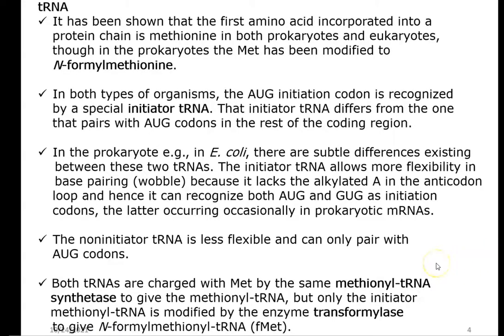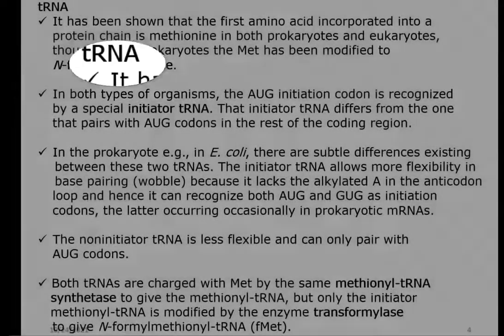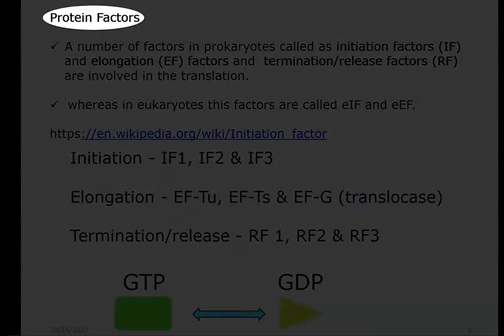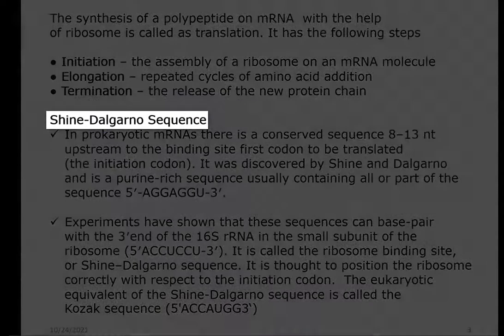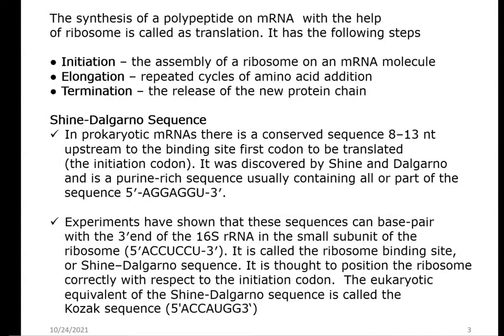Before learning the steps involved in the translation process — initiation, elongation, and termination — we need to understand certain components that are essential for the process. One is the tRNA molecule, that is the transfer RNA molecule. Another is knowing details about protein factors and how they affect translation. The third is understanding the Shine-Dalgarno sequence and its significance in the translation process.